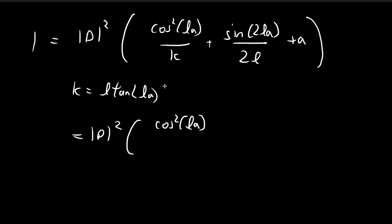So the first thing I'm going to do is instead of writing k, I'm going to replace this by l tangent l a. And then for sine 2 l a, I'm going to use the double angle formula. So sine 2 x is equal to 2 sine x cosine x. This is the expression I'm going to use.